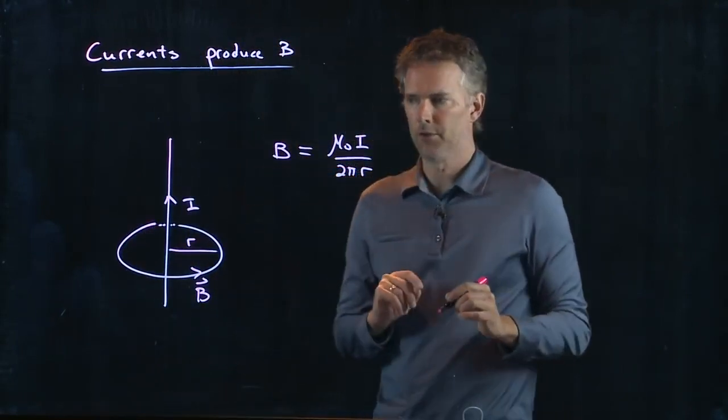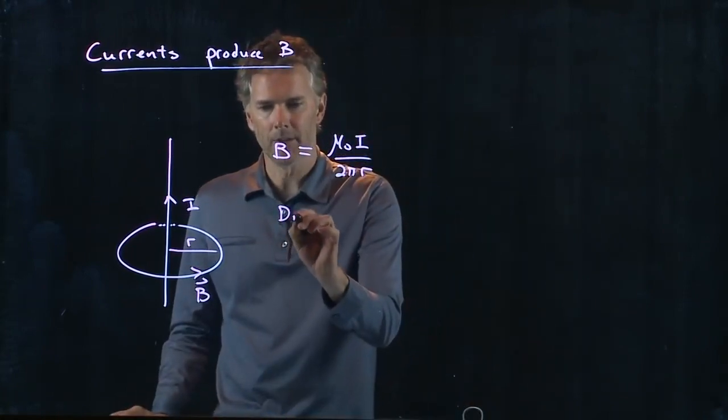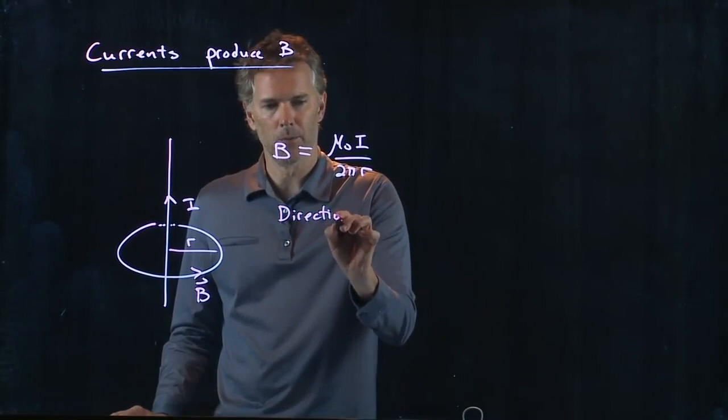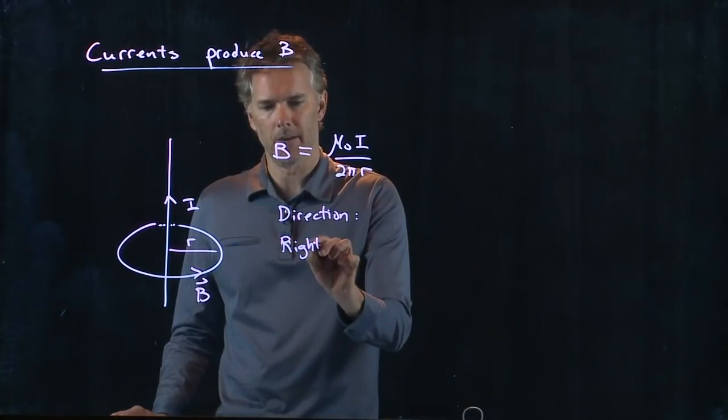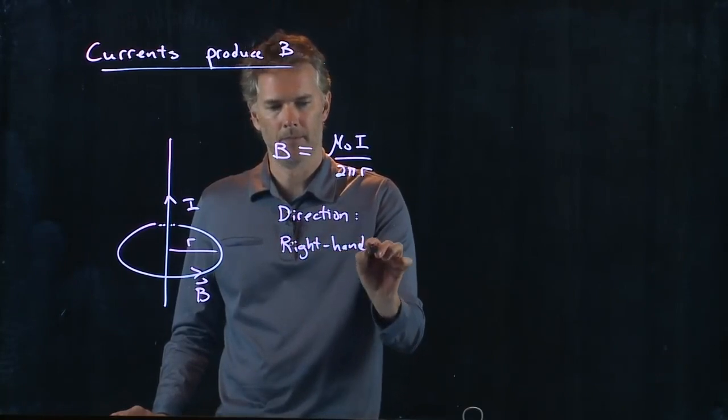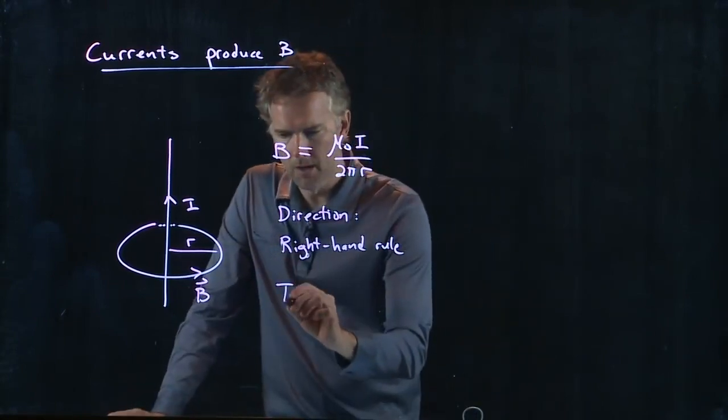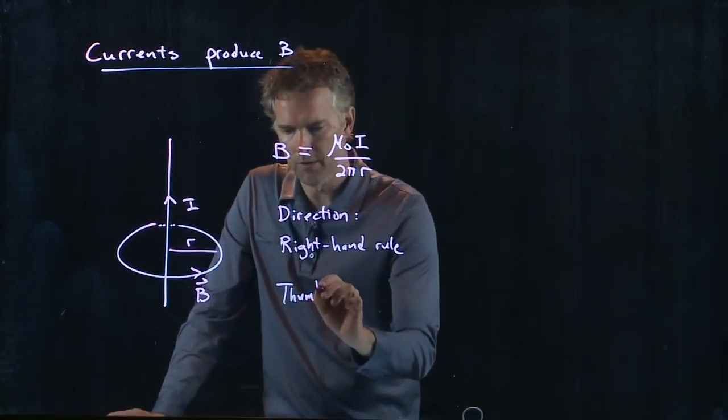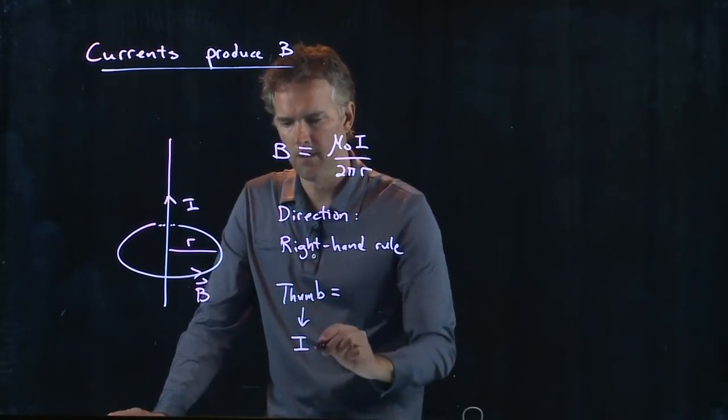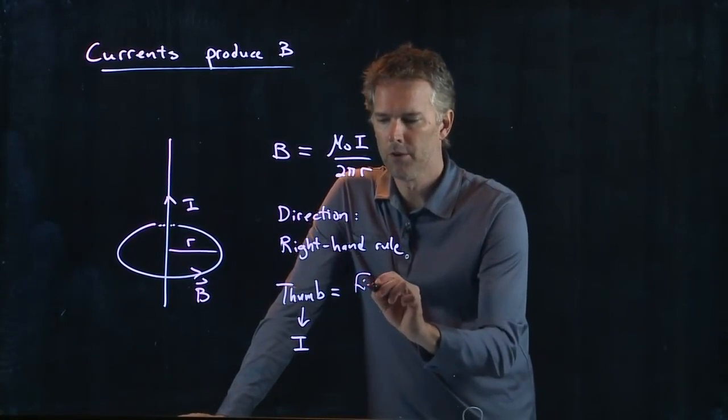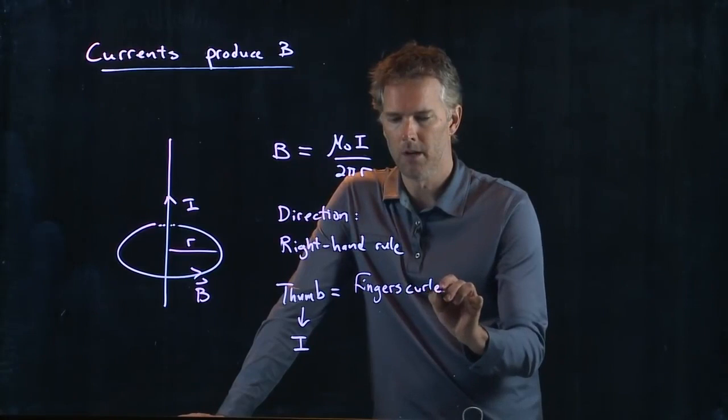The direction is determined from the right-hand rule, but it's a slightly different right-hand rule. It's a slightly modified right-hand rule, which is the following: put your thumb in the direction of the current, and your fingers curl around in the direction of B.